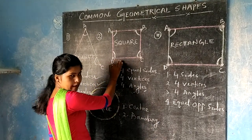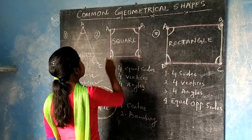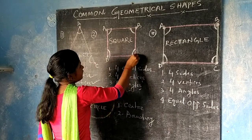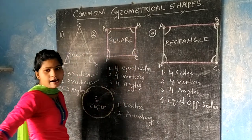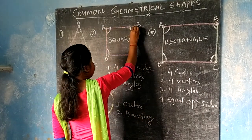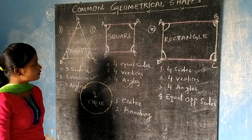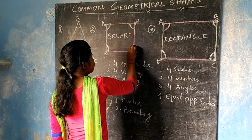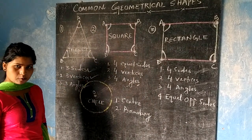It is a geometrical shape. It has four sides: A, B; B, C; C, D; and D, A. And it has four vertices: A, B, C and D. And it has four angles: A, B, C and D. So it is called a square.